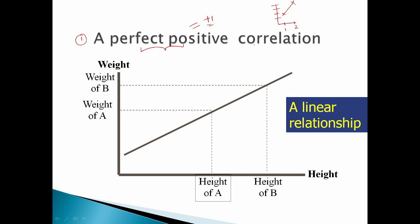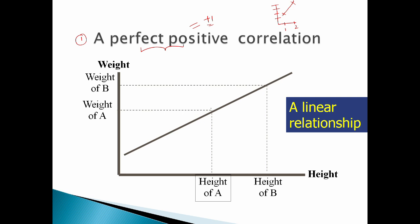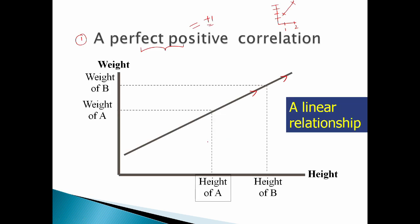But can we call this diagram perfect positive? Let's say the R value, which is the correlation coefficient, is 0.4. That is not perfect. In the previous diagram the line goes straight, but with R=0.4, the line is tilted a little. The points are somewhat scattered around the line rather than lying exactly on it.